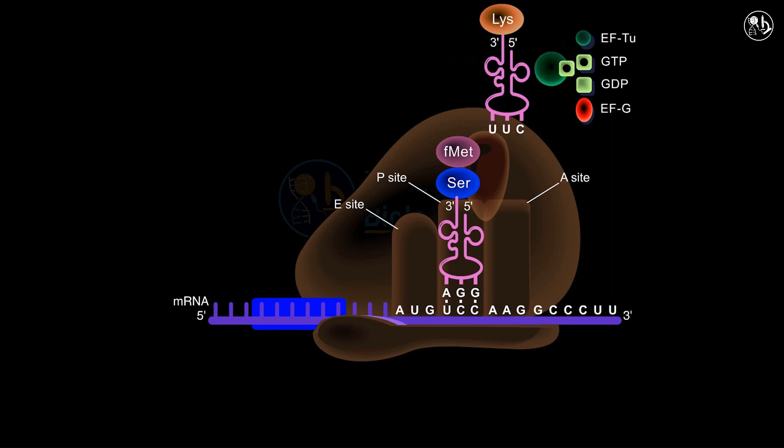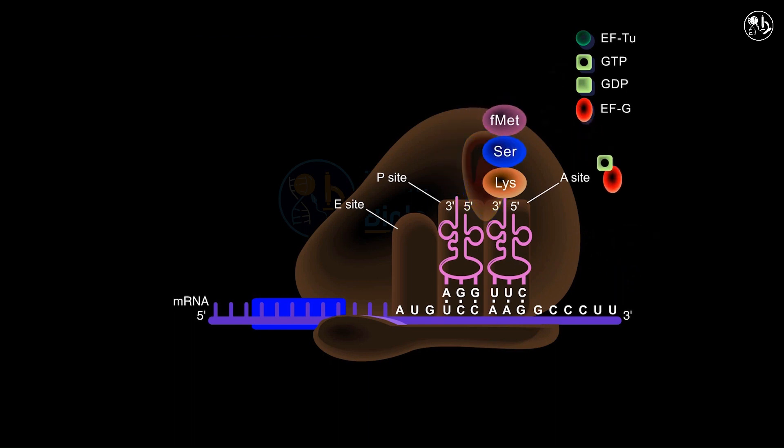Typically, a polypeptide is composed of approximately 300 amino acids. Let's observe the elongation phase once more.